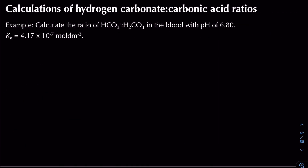We can be asked to calculate the ratio of hydrogen carbonate to carbonic acid, or vice versa. In this example we calculate the ratio of hydrogen carbonate to carbonic acid in blood at pH 6.8, given Ka = 4.17 × 10⁻⁷. Writing the Ka expression gives us Ka = [H+][HCO₃⁻] / [H₂CO₃].